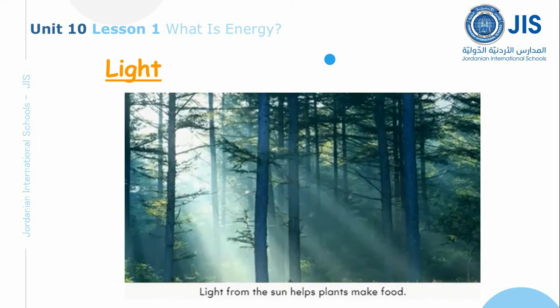Light from the sun helps plants make food. The sun is an important source of light. Plants use light from the sun to make their own food.